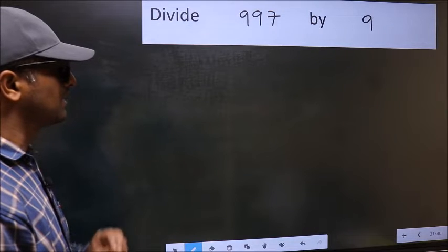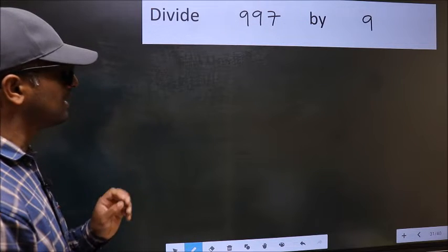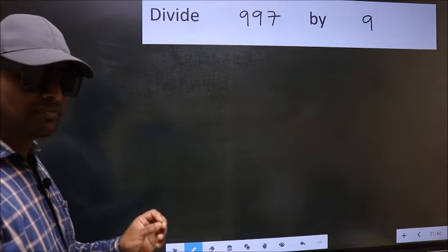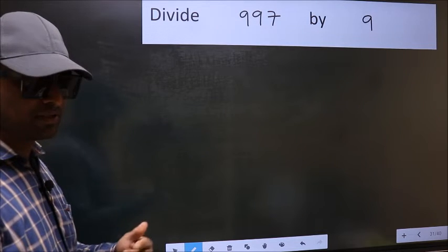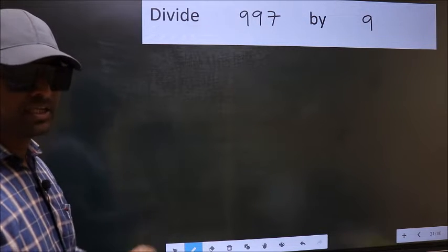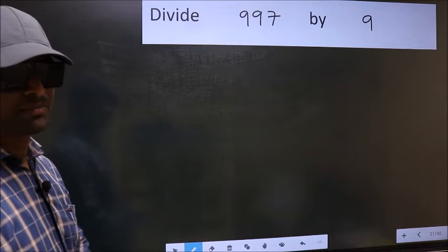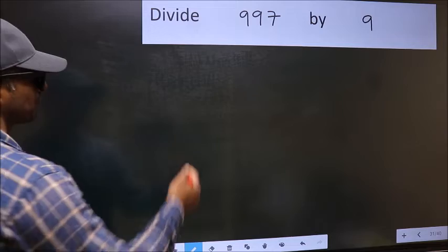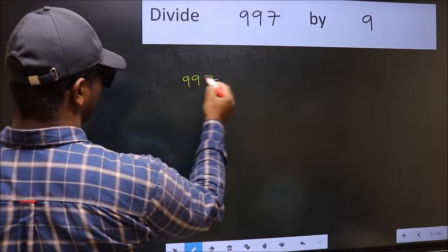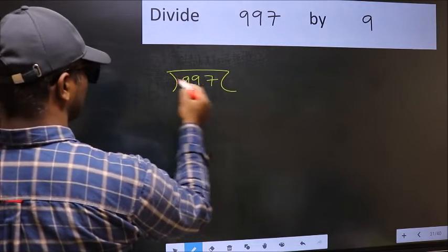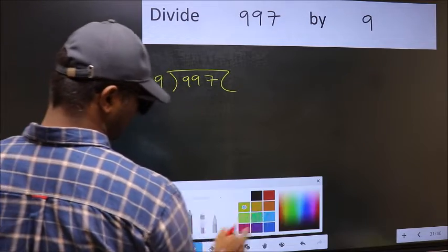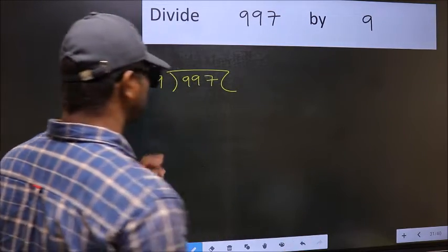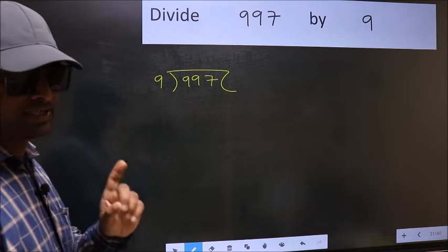Divide 997 by 9. While doing this division, many do this mistake. What is the mistake that they do? I will let you know. But before that, we should frame it in this way. 997 and 9 here. This is your step 1.